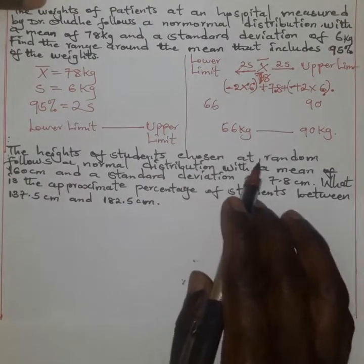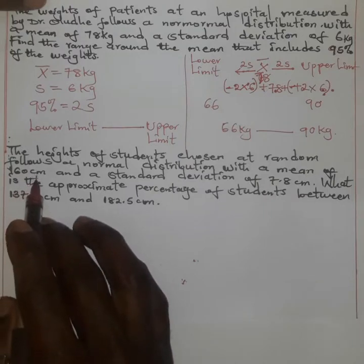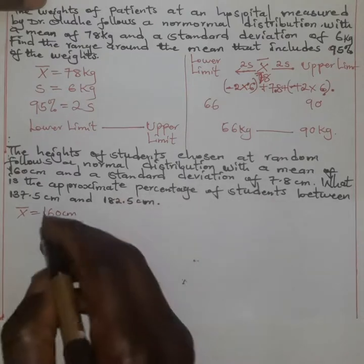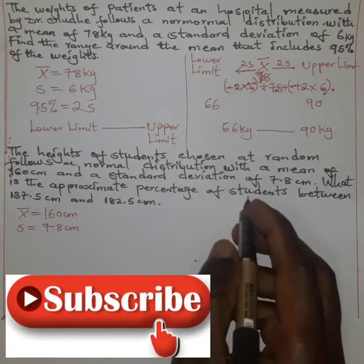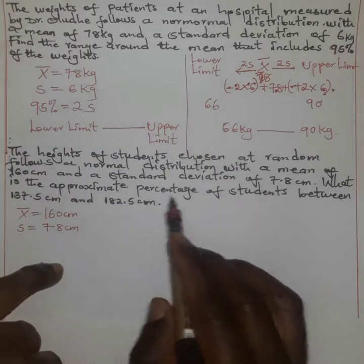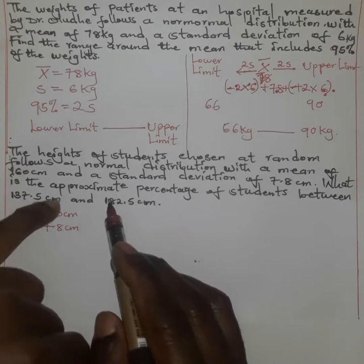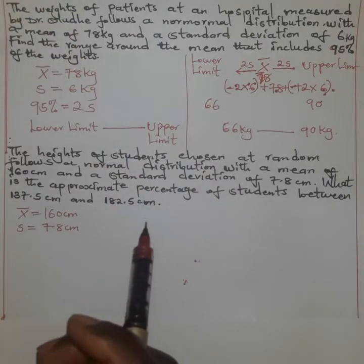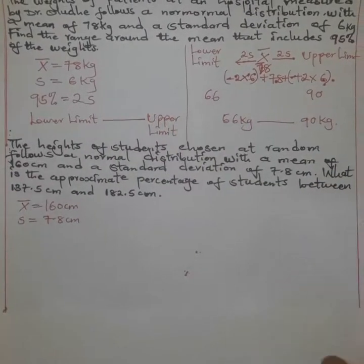The height of students chosen at random follows a normal distribution with a mean of 160 centimeters and a standard deviation of 7.5 centimeters, meaning the height can go up or go below by 7.5 from 160. What is the approximate percentage of students between 137.5 centimeters and 182.5 centimeters? We are supposed to determine whether it is 68%, 95%, or 99.7%.